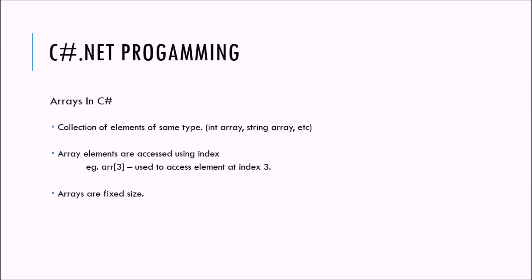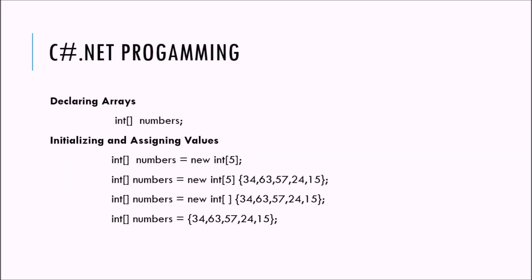An array is a fixed-size sequential collection of elements of the same type. When you declare the array you need to specify its size — that is why it is called fixed size. Fixed size means you cannot increase or decrease the size of the array at runtime. To declare an array in C-sharp, we use square brackets that must come after the data type and not after the identifier.